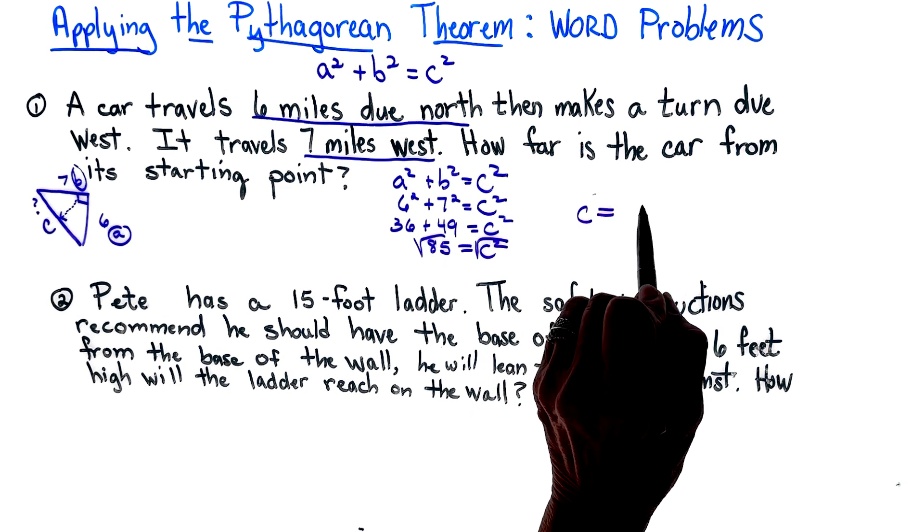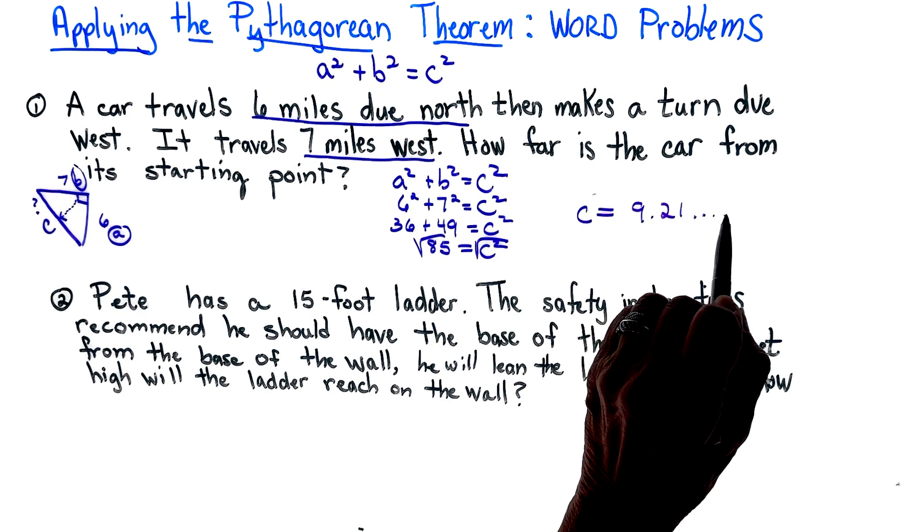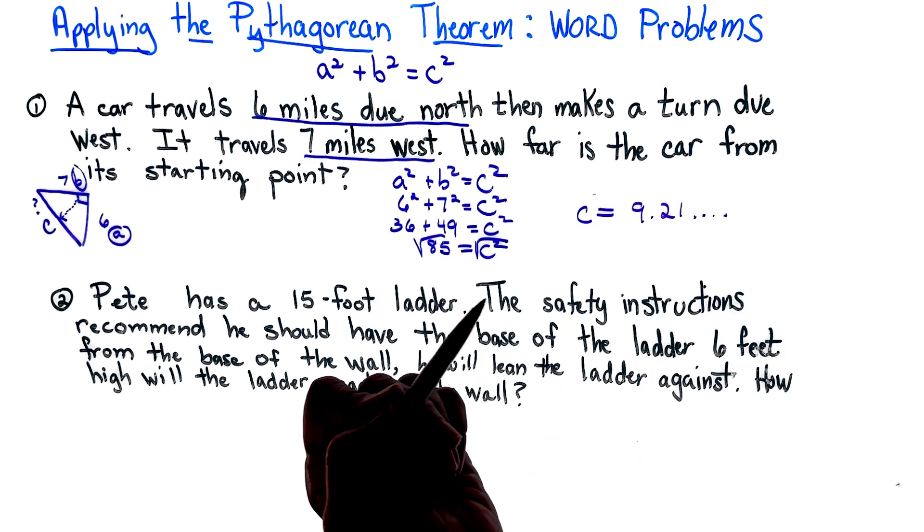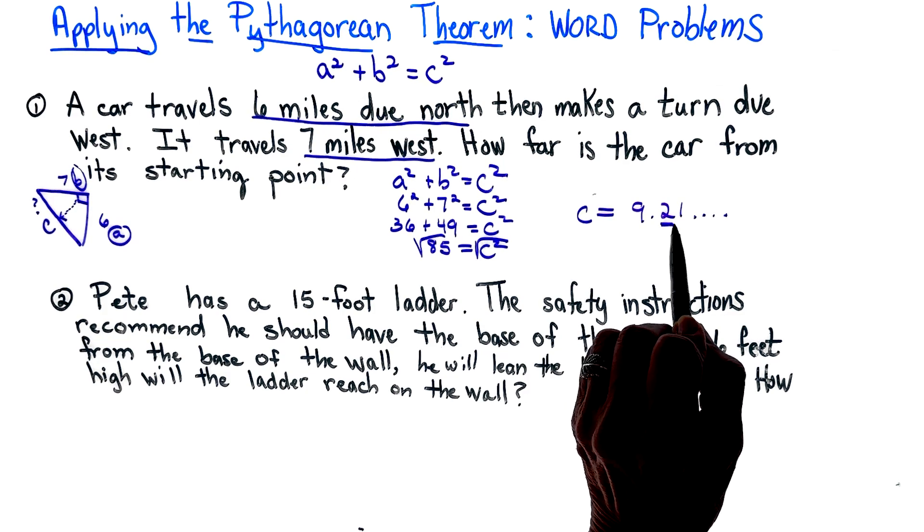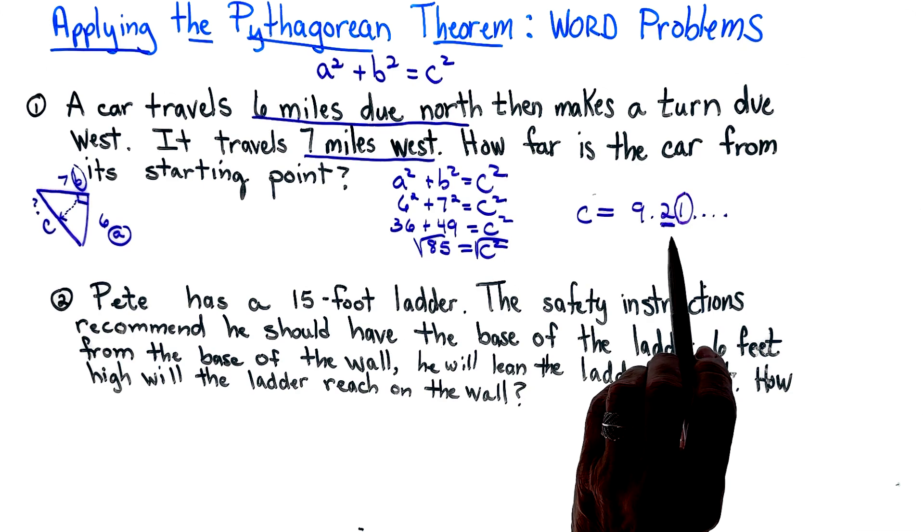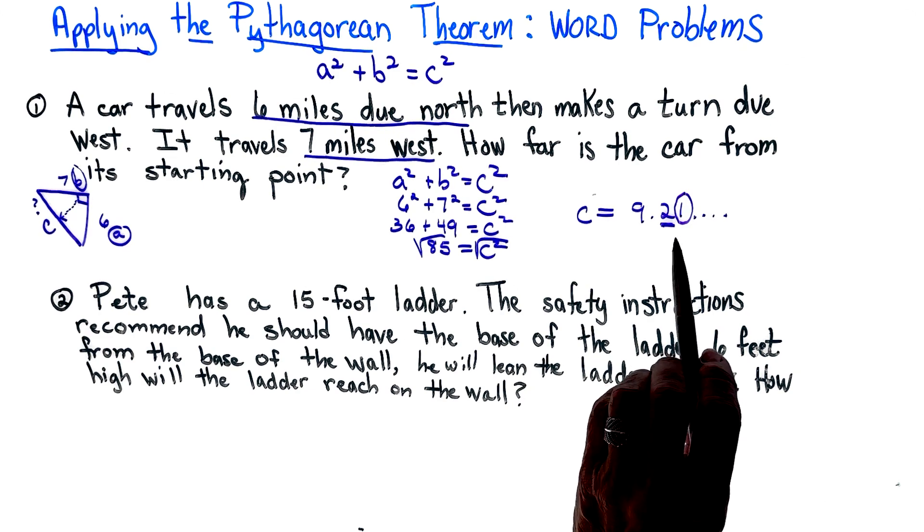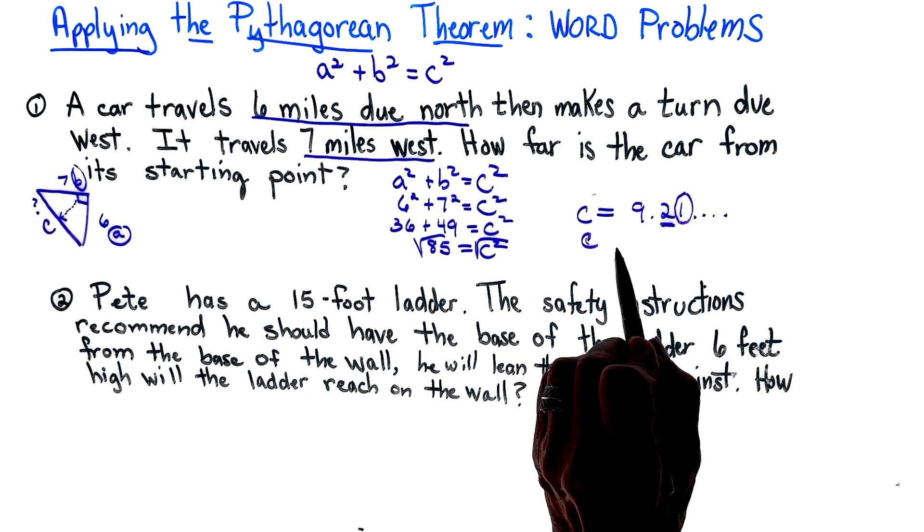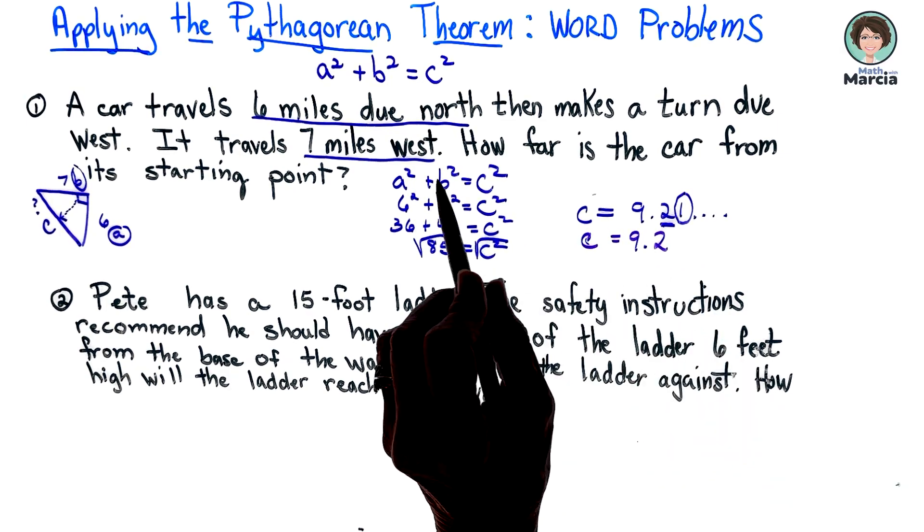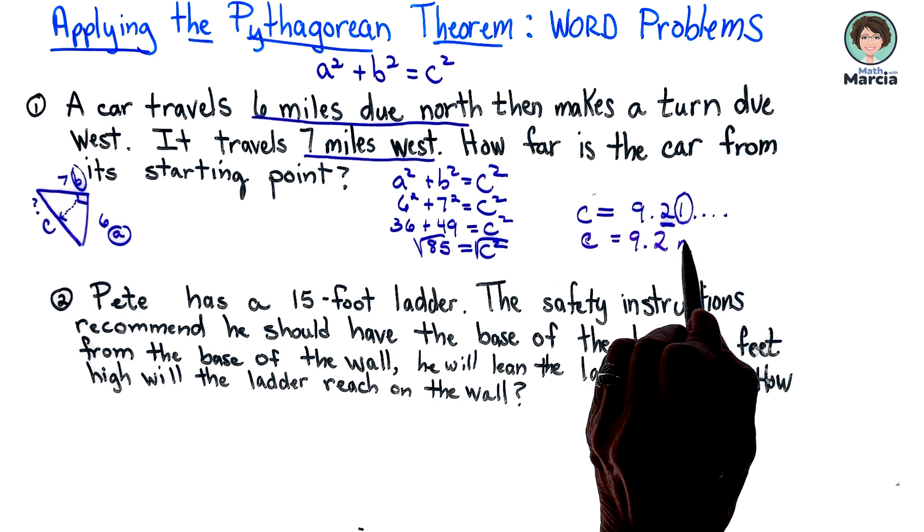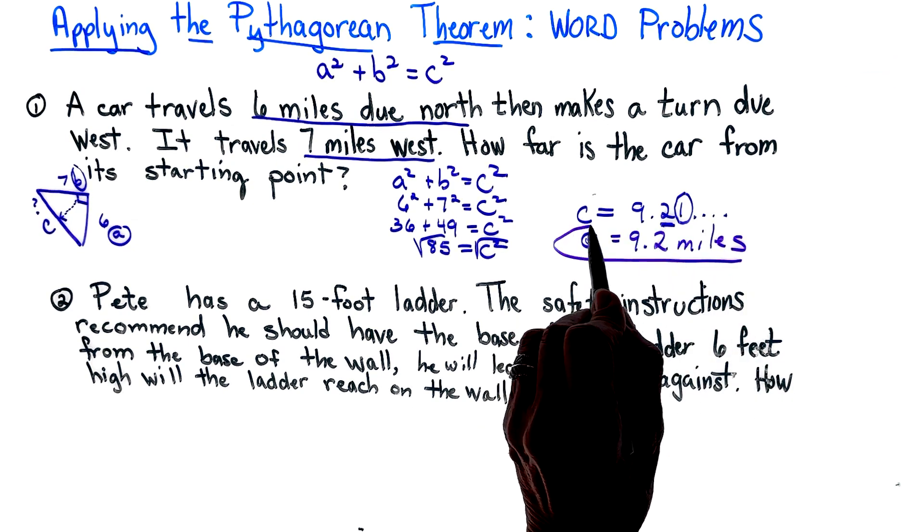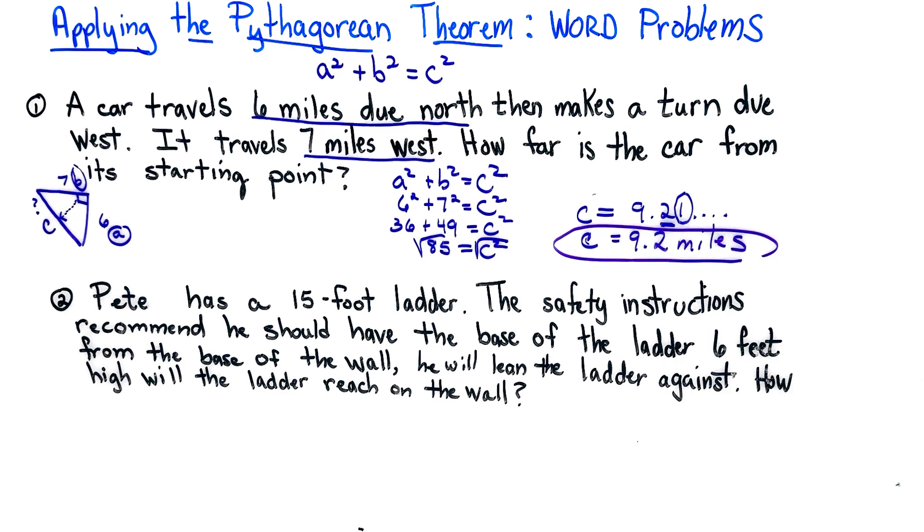So I end up getting c equals, and when you put that in your calculator you get something that looks like this. But the directions will usually say round to the nearest tenth, so let's do that. I'm underlining my two which is my tenths place, looking at my hundreds place. So the distance is 9.2 miles, and there's the answer for the first problem.